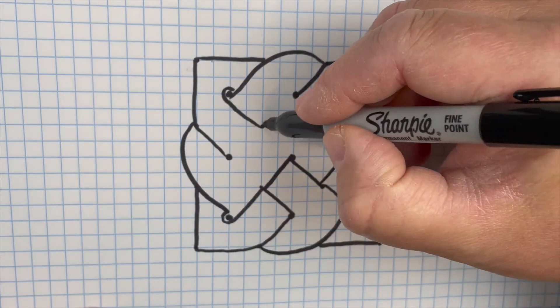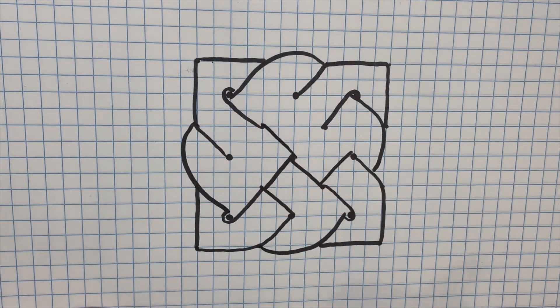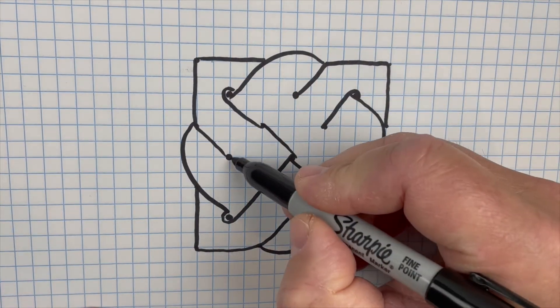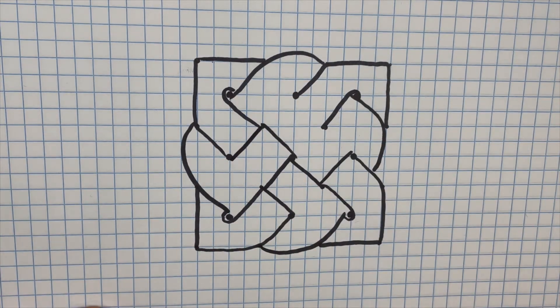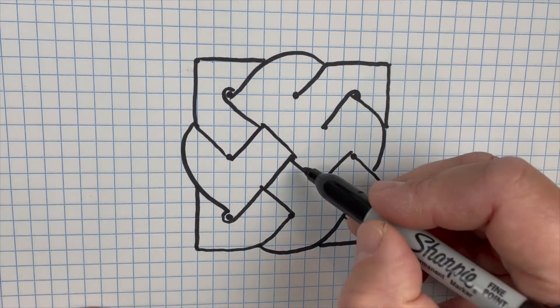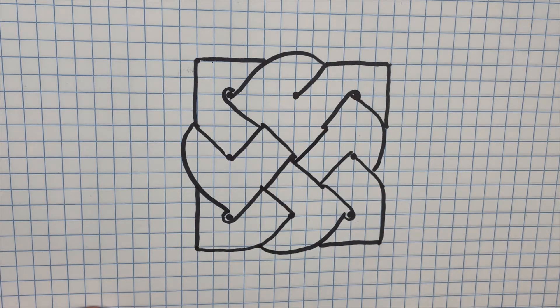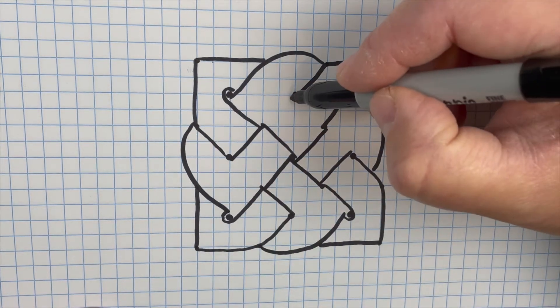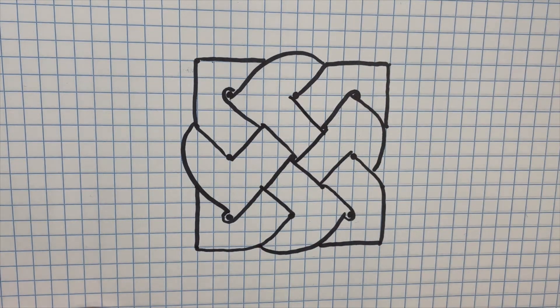And again straight down, and straight across. So you see kind of how you're forming a weave pattern, straight across. And once again, you're joining the center, straight across.